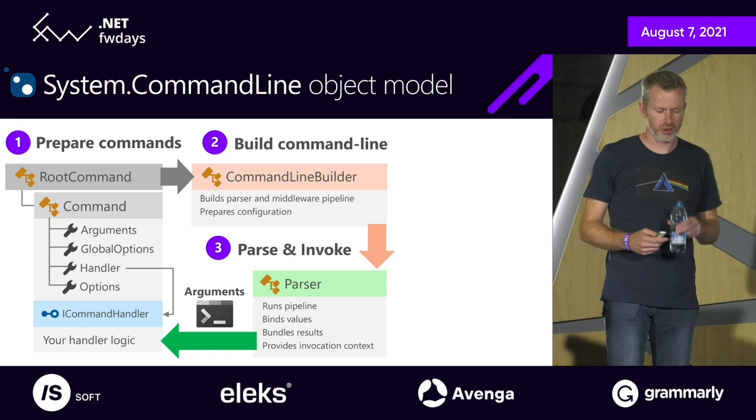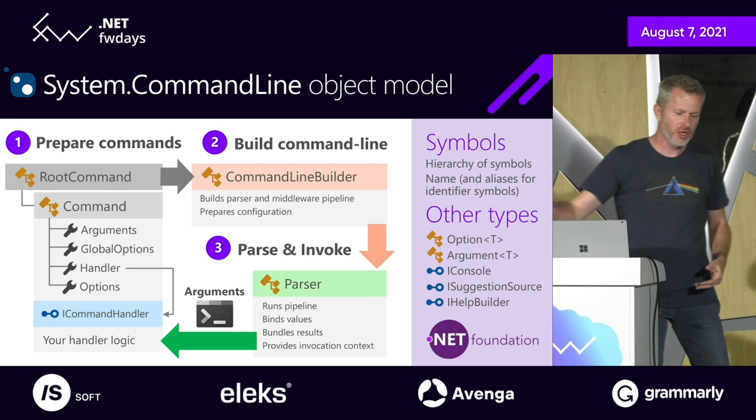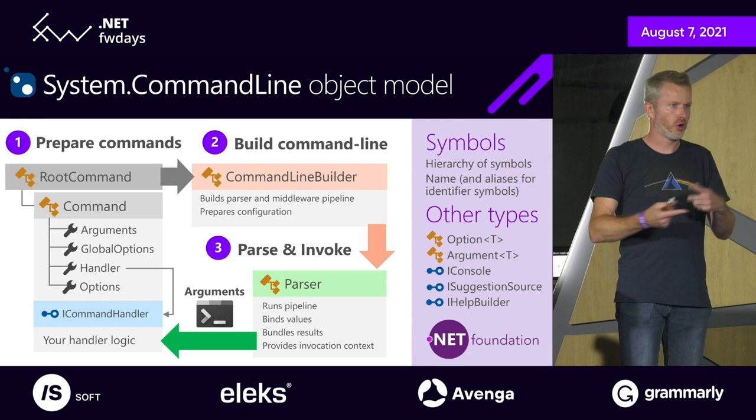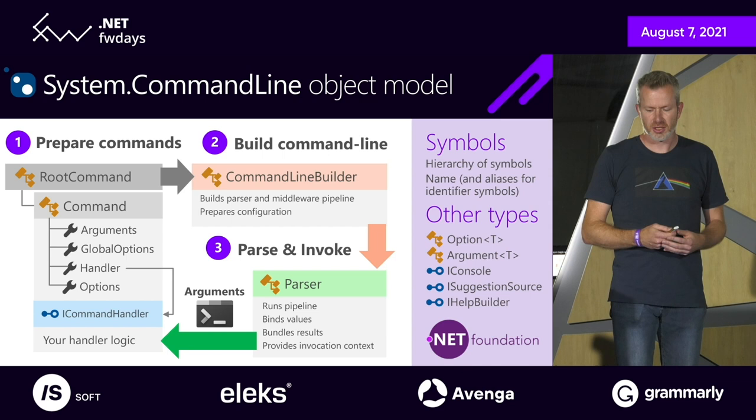To the side, the object model recognizes symbols as the underlying base class for arguments, options, and commands, because they all have a name and sometimes a value. There are other interfaces you might find convenient. Do know that the System.CommandLine library is under the .NET Foundation.